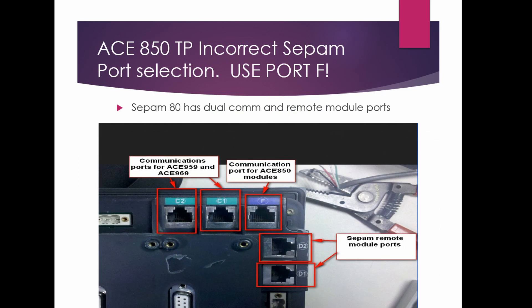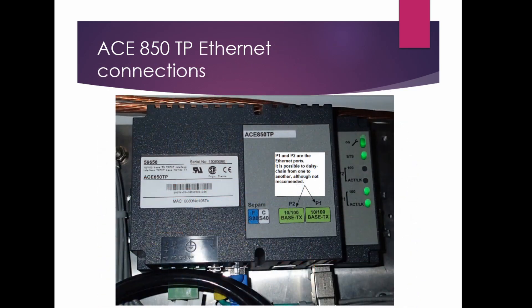When plugging in cables, make sure you're plugged into the right port on the base unit. Port F is where you plug in for your ACE850. C2 or C1 can be used for the 959 and 969 modules. D1 and D2 are used for modules such as the SyncCheck MCS025 or an MSA analog input/output module. Even though all the jacks look the same, they don't work the same.